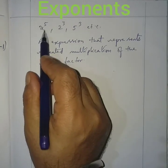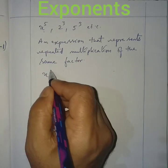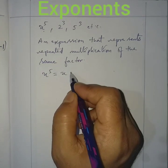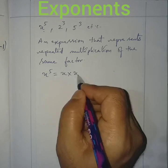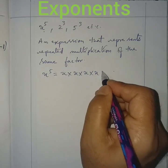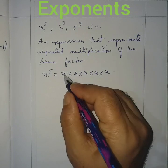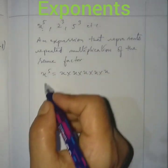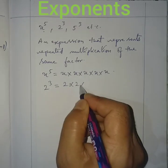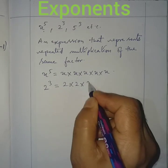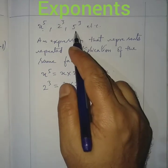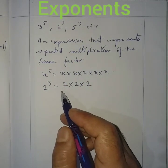For example, x to the power 5 means x multiplied 5 times: x × x × x × x × x. And 2 to the power 3 means 2 × 2 × 2. Similarly, 5 to the power 3 means 5 × 5 × 5.